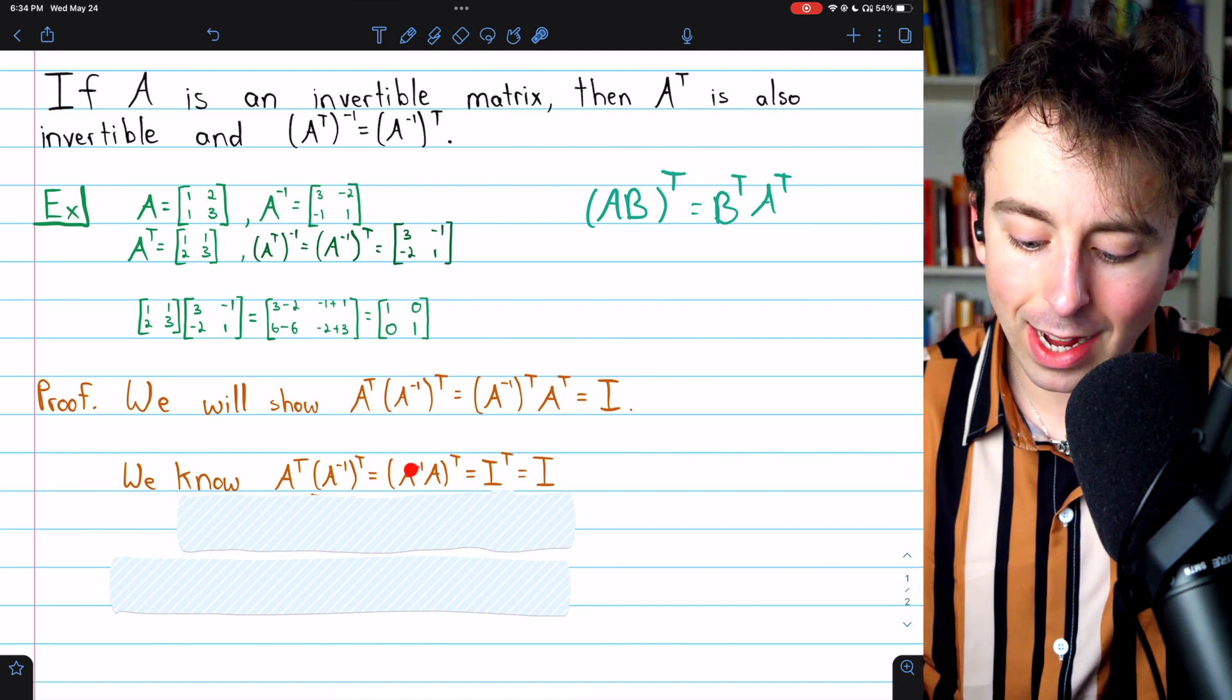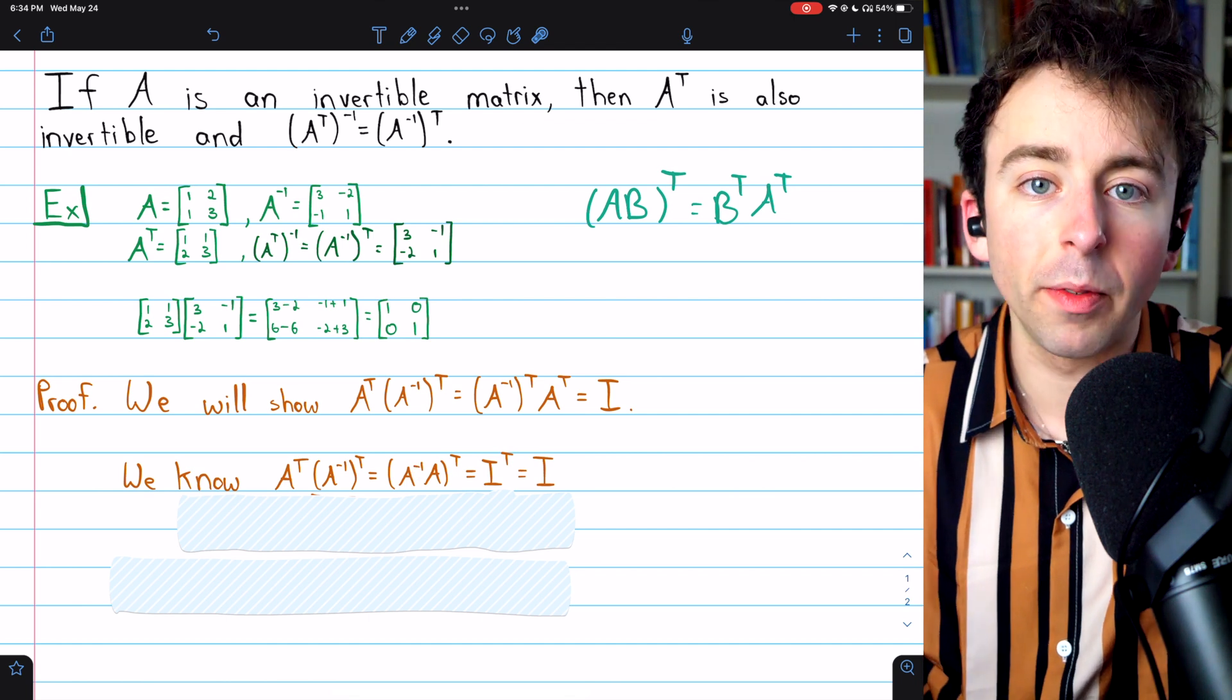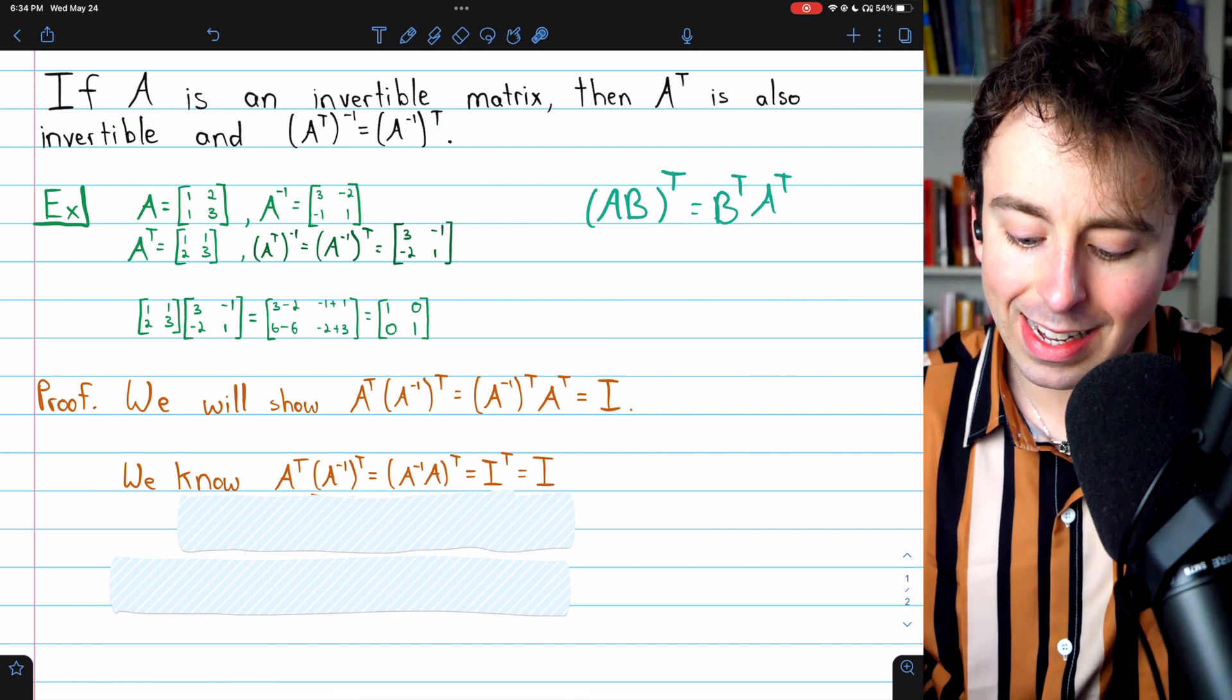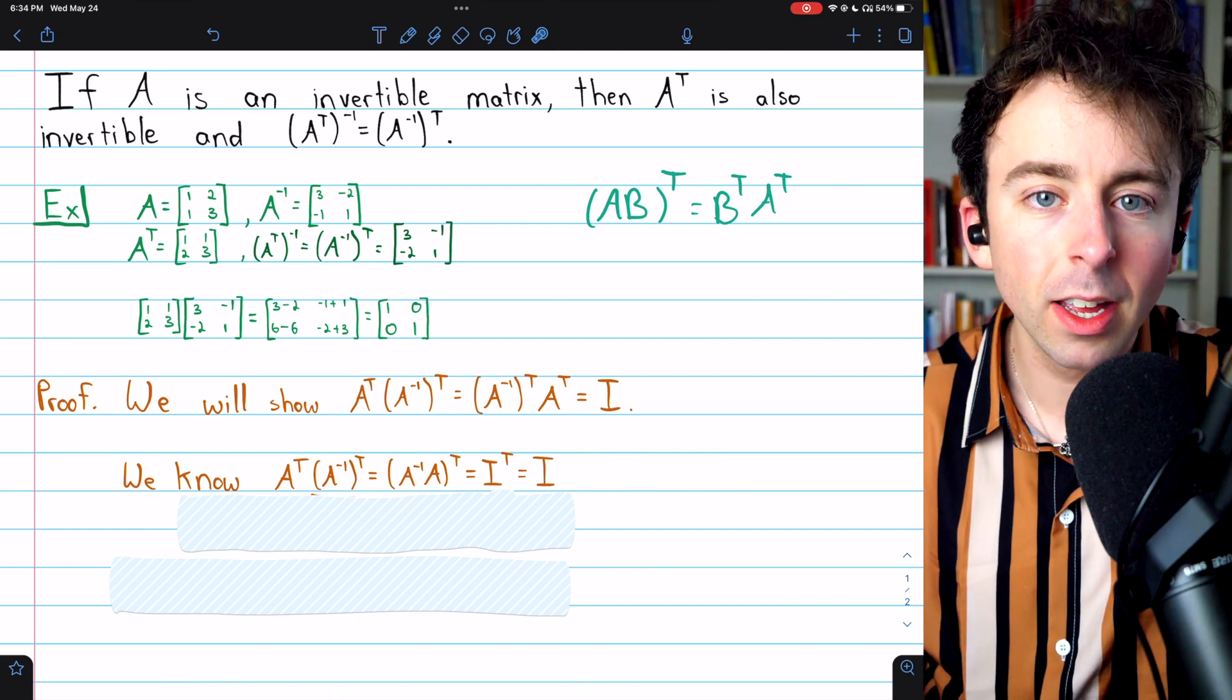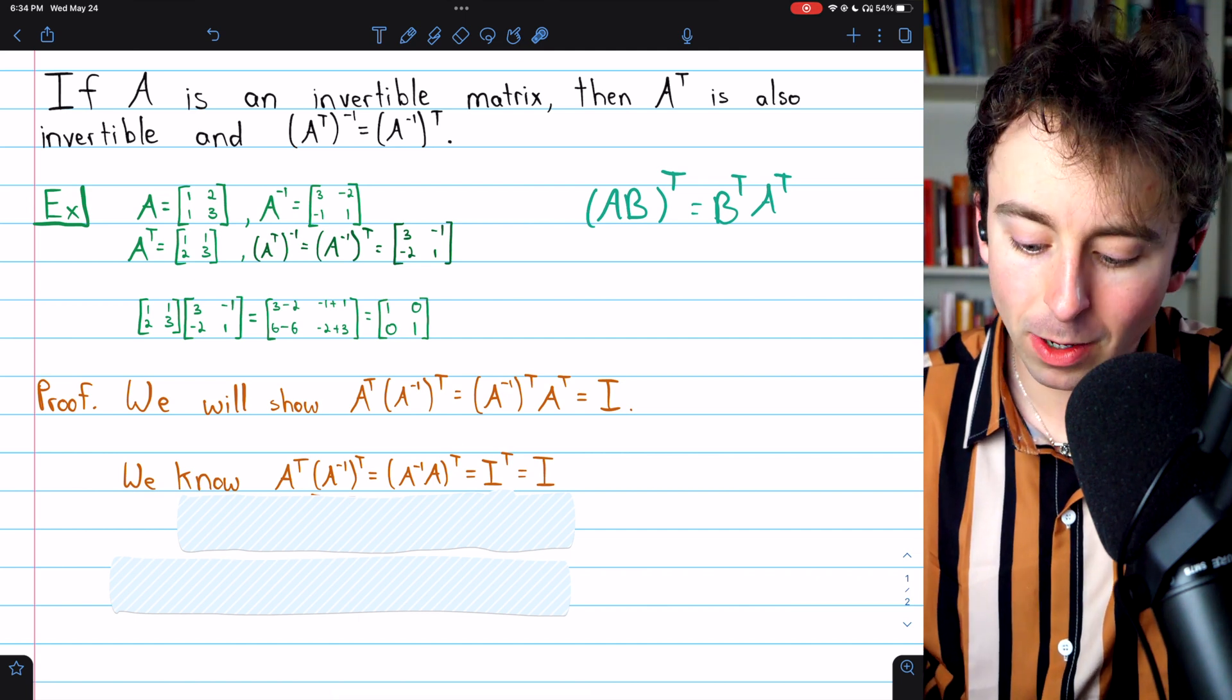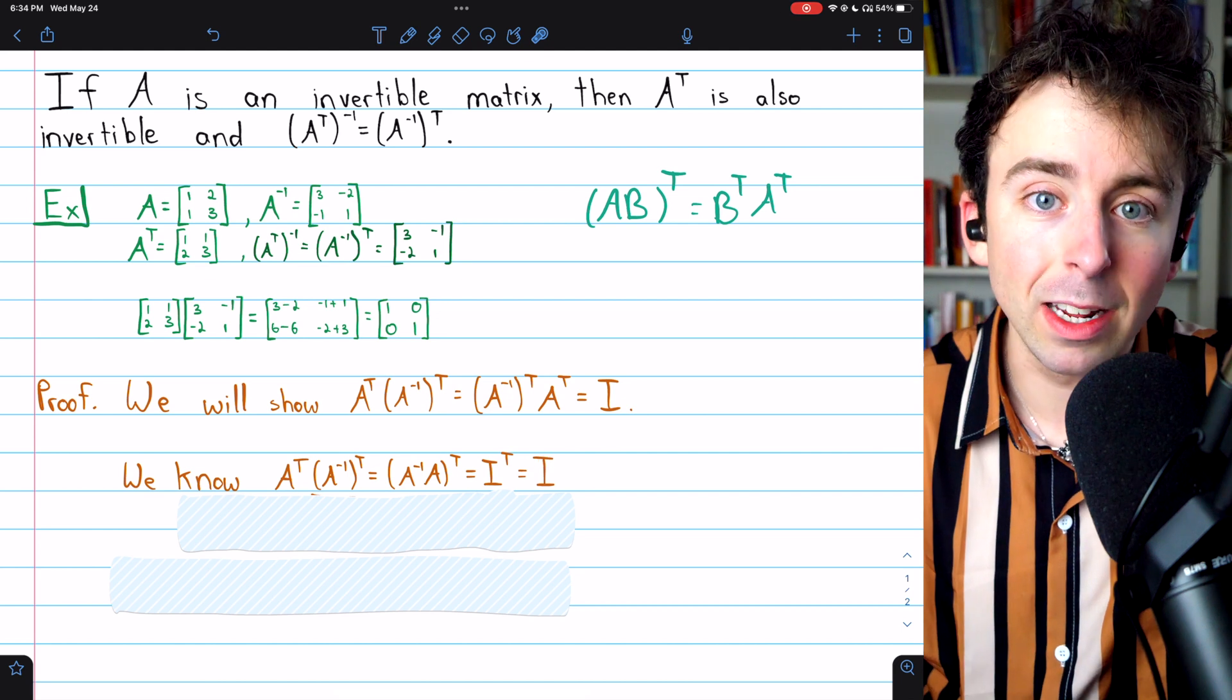But then A inverse A, this product here by definition of an inverse matrix, is just the identity. So this transpose is the identity transpose, but the transpose of an identity matrix is just the identity matrix.